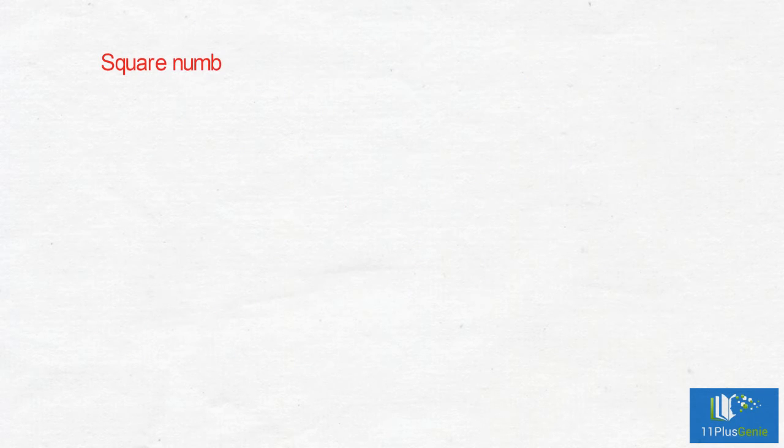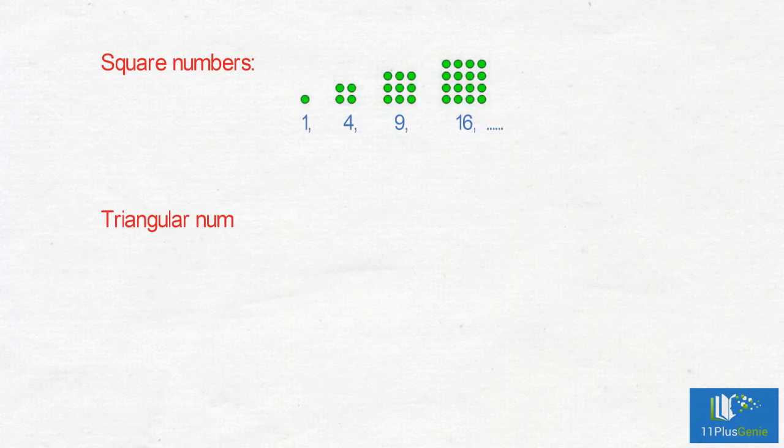Square numbers are 1, 4, 9, 16, and so on. Triangular numbers are 1, 3, 6, 10, and so on.